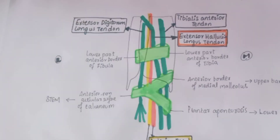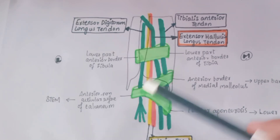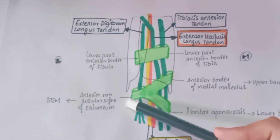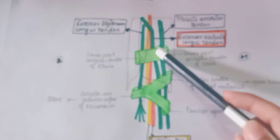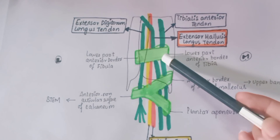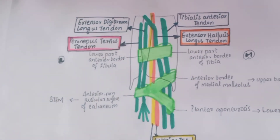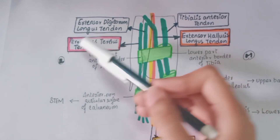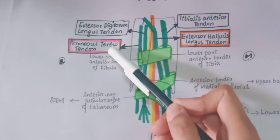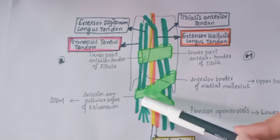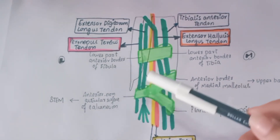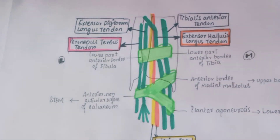The next structure is the extensor digitorum longus tendon, which is enclosed by the stem of the inferior extensor retinacula and passes deep to the superior extensor retinacula. The last structure is the peroneal tertius tendon, which is also enclosed by the stem of the inferior extensor retinacula and passes deep to the superior extensor retinacula.